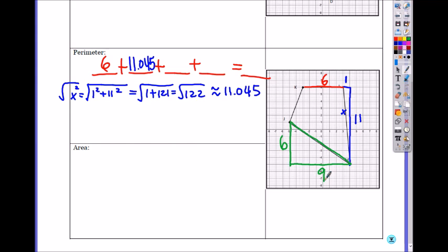If I call this y, y is square root of nine square plus six square, which is square root of eighty-one plus thirty-six, which is square root of one seventeen.